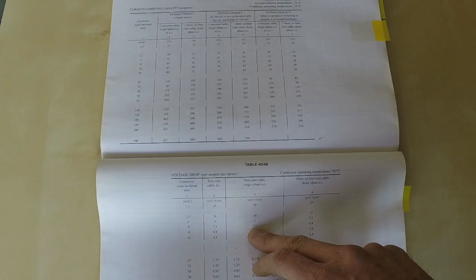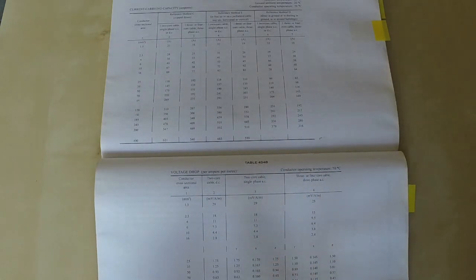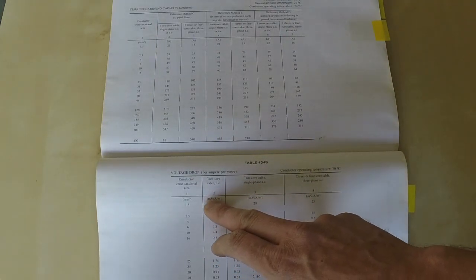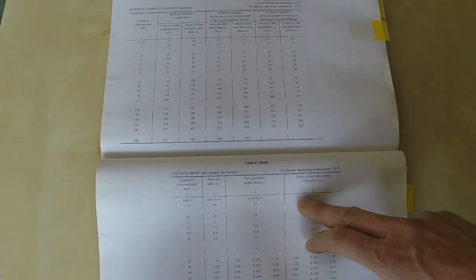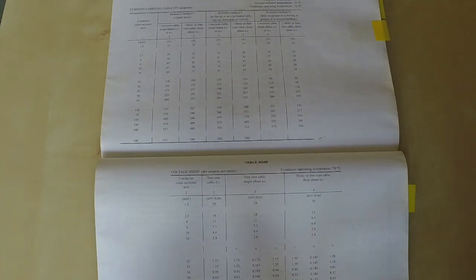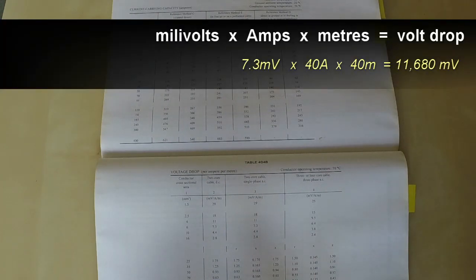So now you come to the formula. The formula is there just at the top, so if you forget it, it's there. That's millivolts times the amount of amps you want—which in our case is 40 amps—times the length. The length we're going to say is 40 meters. The calculation for that is 7.3.